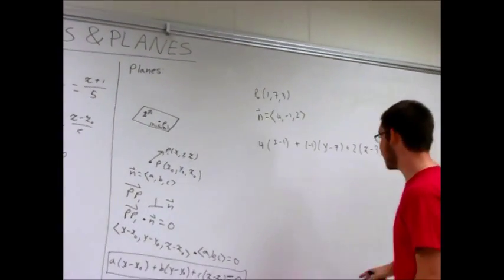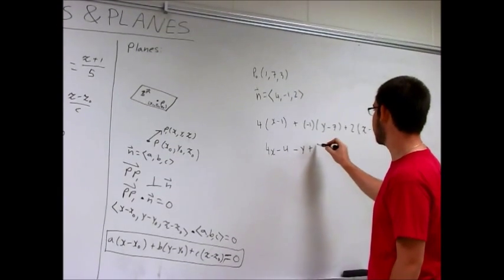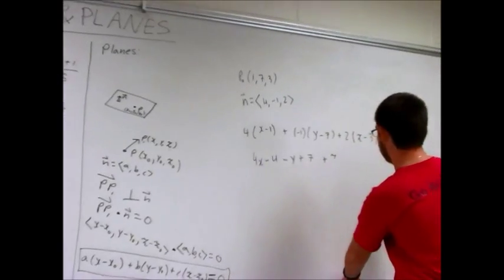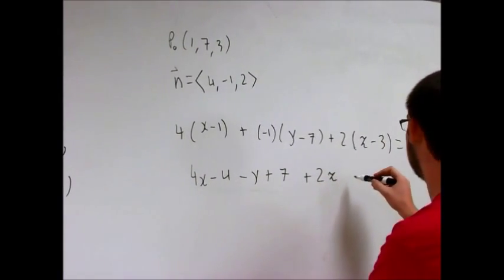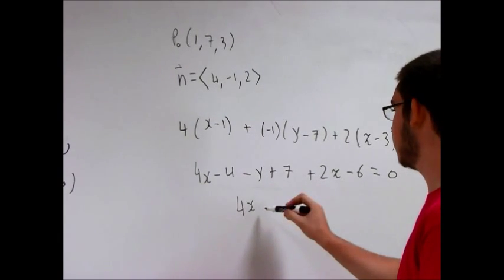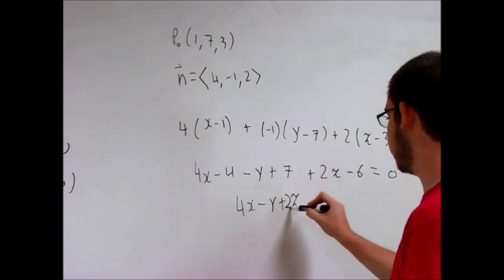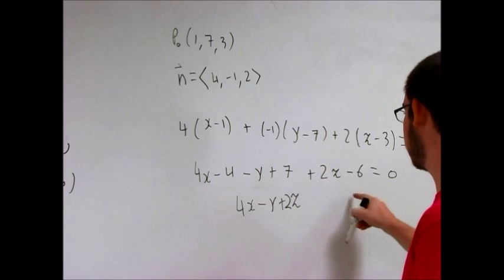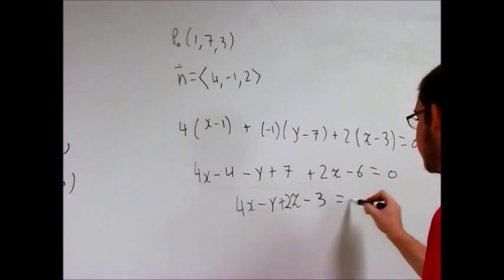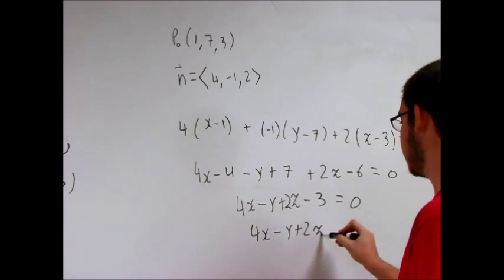And if we want, we can expand this, 4x minus 4, minus y plus 7, plus 2z minus 6 equals 0. Or 4x minus y plus 2z equals 3.